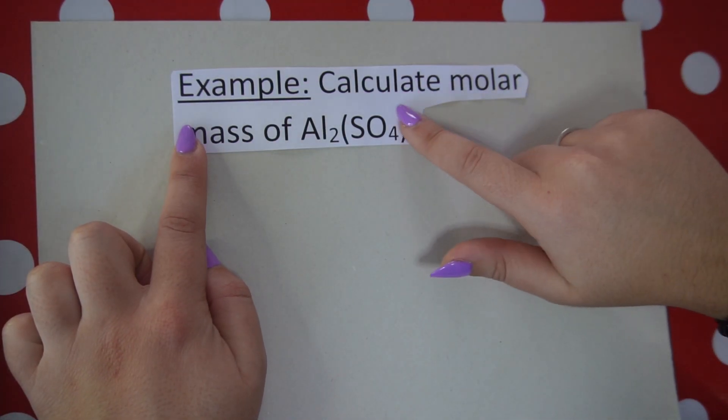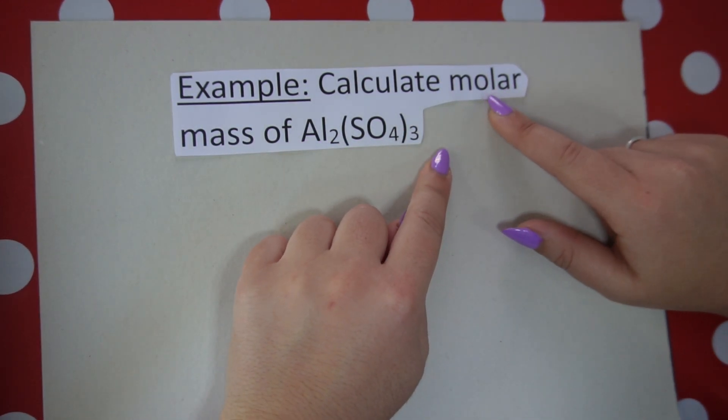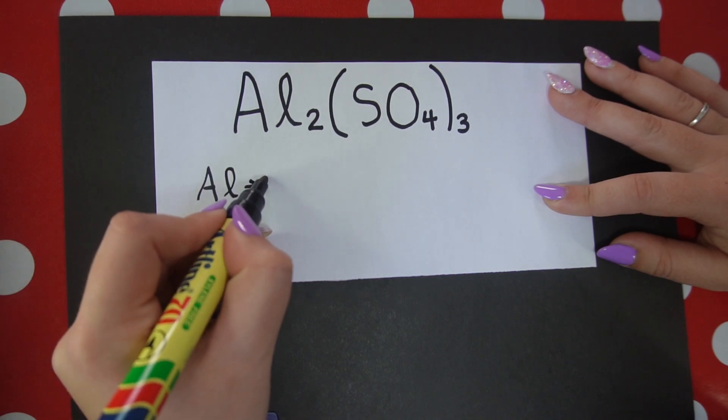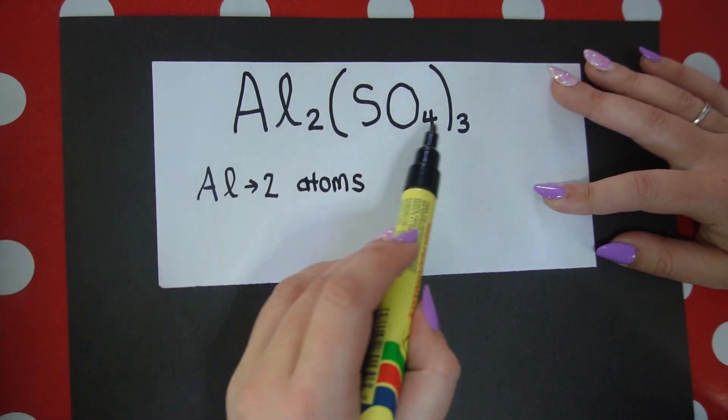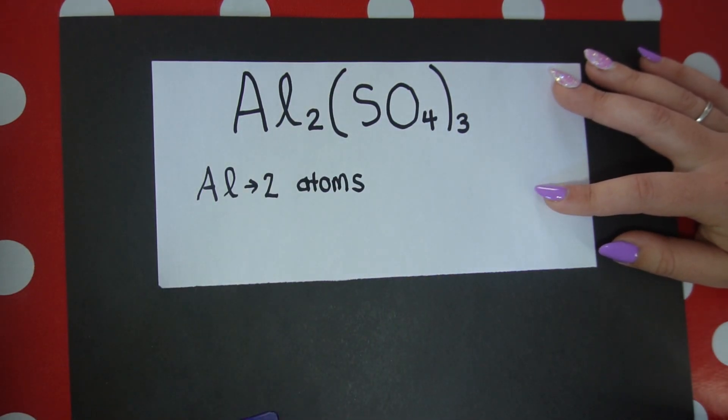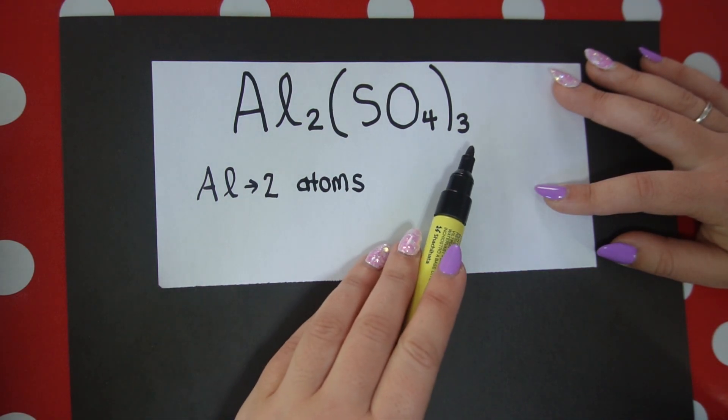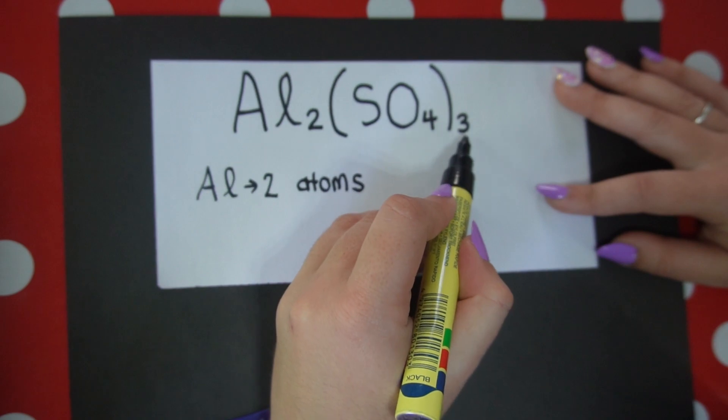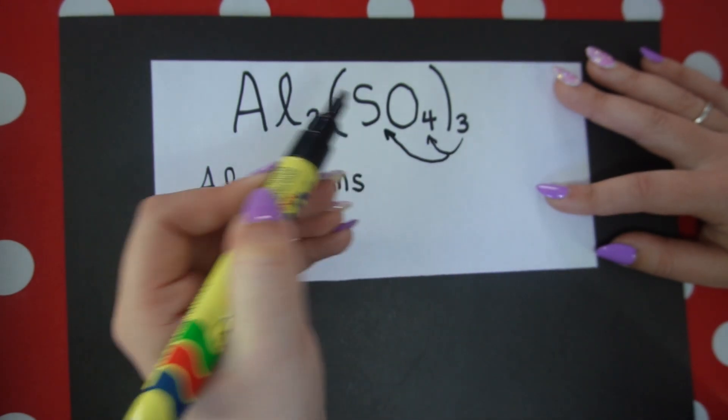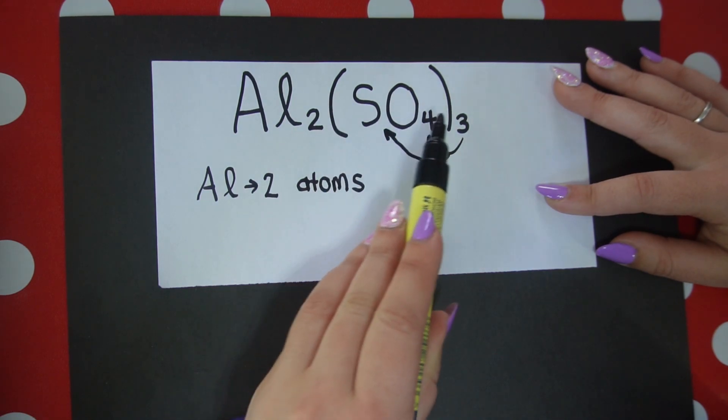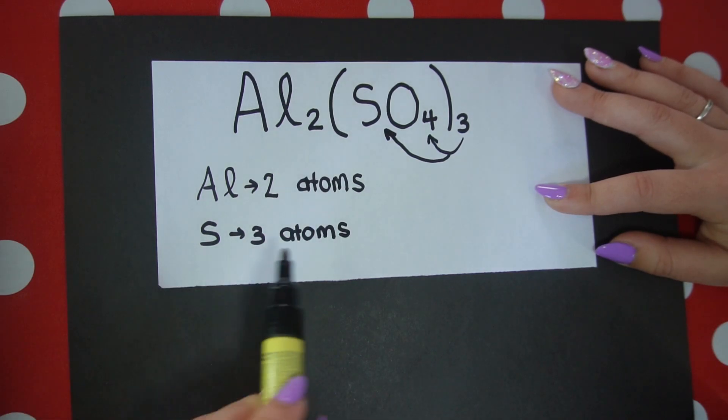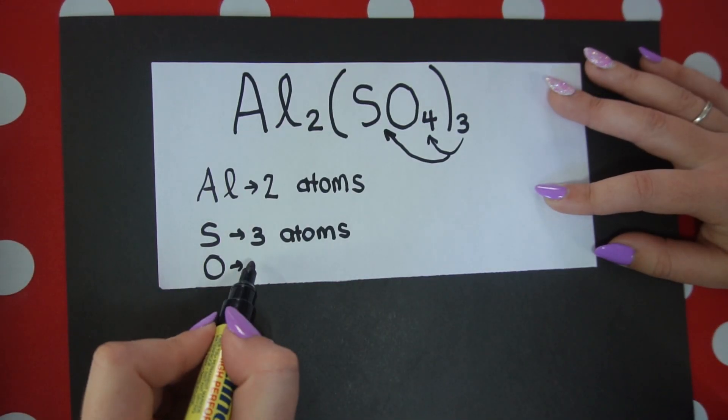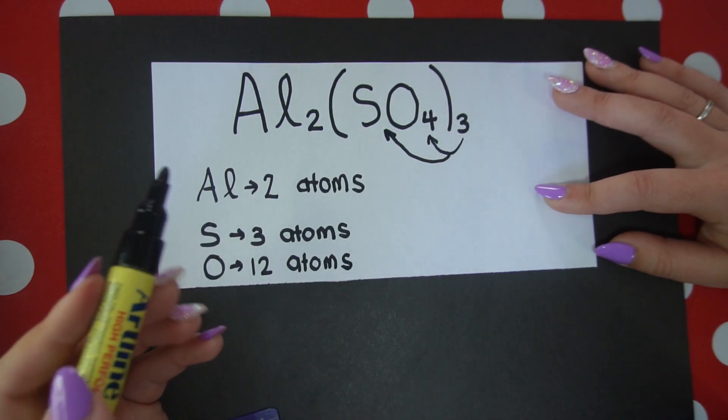In our next example I want us to calculate the molar mass of Al2(SO4)3. This is aluminum sulfate. In terms of our aluminum, we have two atoms because of the two over there. Now when you look at this, because we have brackets or parentheses, I need you to think of this as follows: that little three outside the bracket applies to both the sulfur and the oxygen. You are going to distribute this three into the brackets like that. So we don't have one sulfur anymore. We have one times three, three atoms. And in terms of our oxygen atoms, we don't have four oxygen atoms. We need to multiply that by three. So we have four times three, we have 12 atoms.